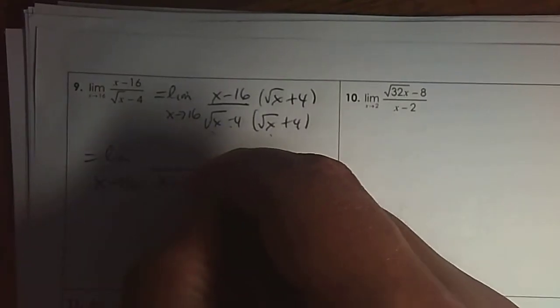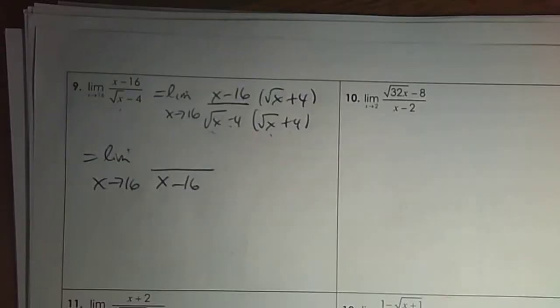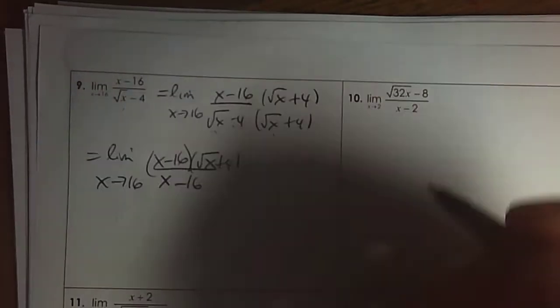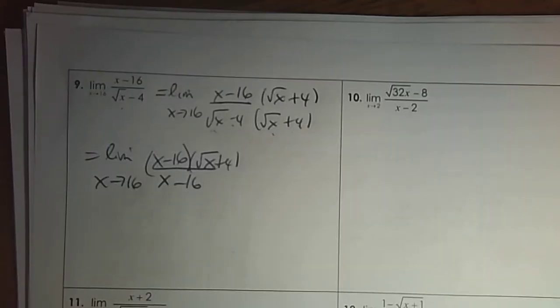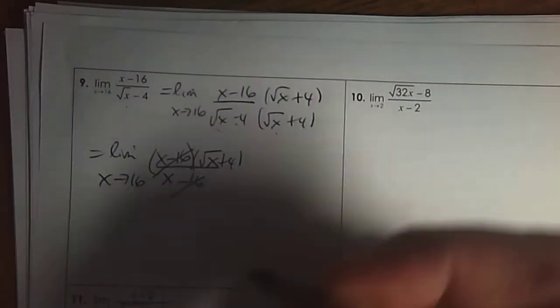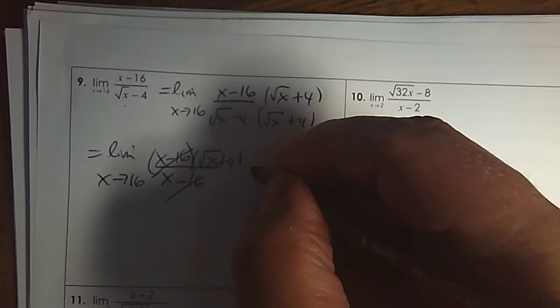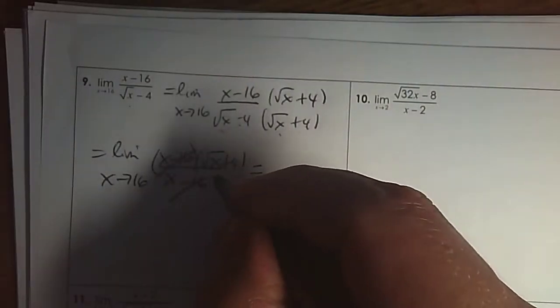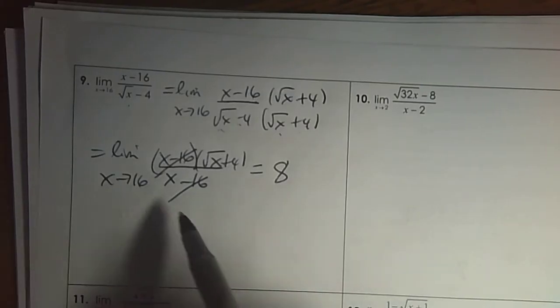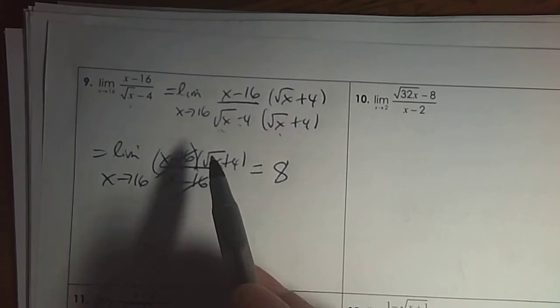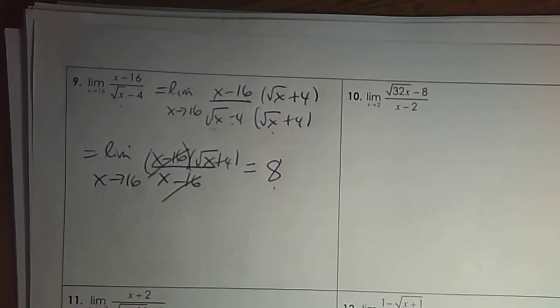So identify the square root, and then write that binomial with an opposite sign to make the conjugate. In the denominator, root x times root x is x, and negative 4 times 4 is negative 16. In the numerator, you already have an x minus 16. The root x plus 4, we're not going to multiply it out — just put them beside each other. Then x subtract 16 divides out. Substitute in and you get the answer 8, because the square root of 16 is 4 plus 4.